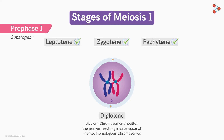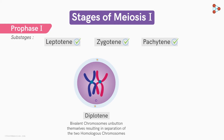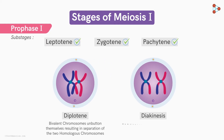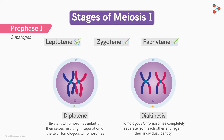Finally, in the last substage called diakinesis, the homologues get completely unhooked and regain their individual identity. The nuclear membrane and the nucleolus completely disappear by the end of prophase I.